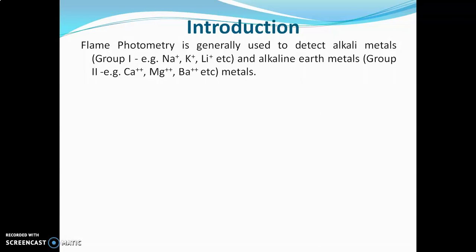Flame photometry also detects alkaline earth metals, that is group 2 elements like calcium, magnesium, and barium. The samples analyzed by flame photometry are generally soil samples, water samples, and food samples, in which the presence of these group 1 and group 2 elements is detected.